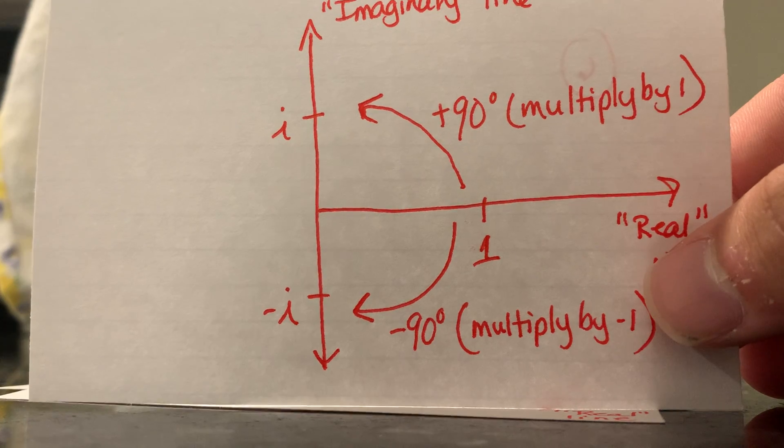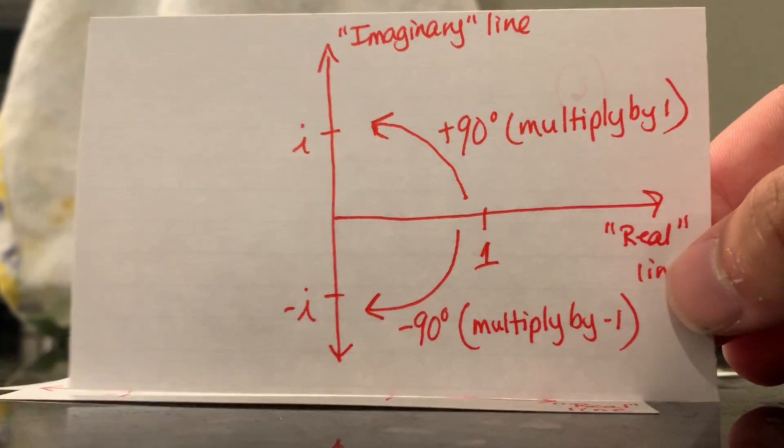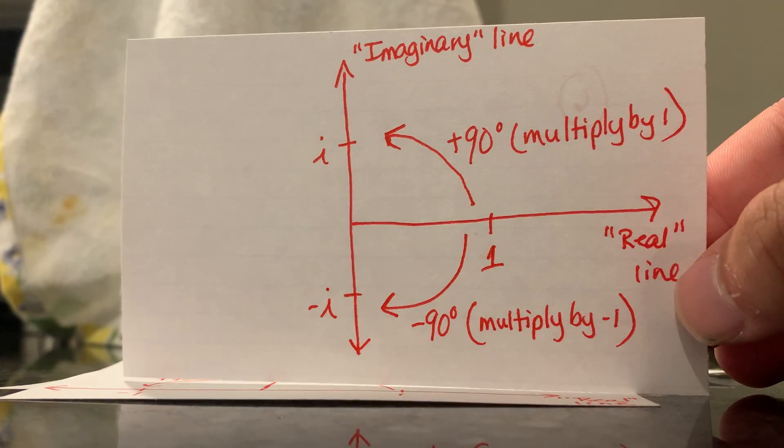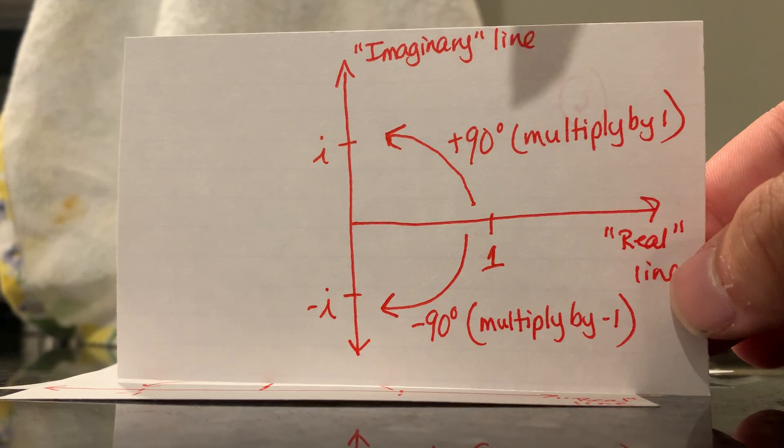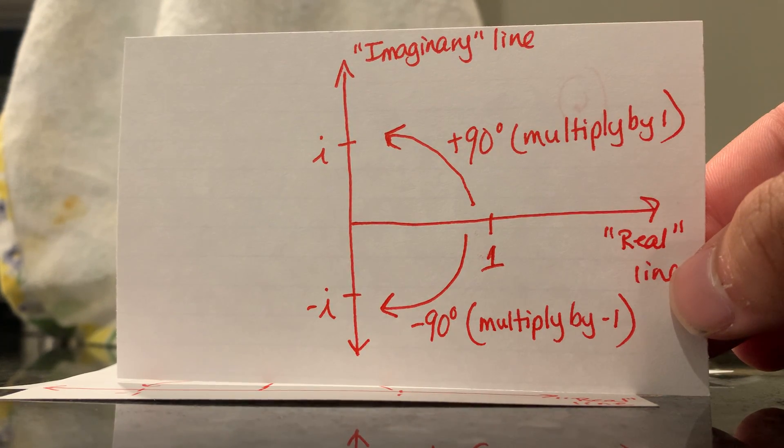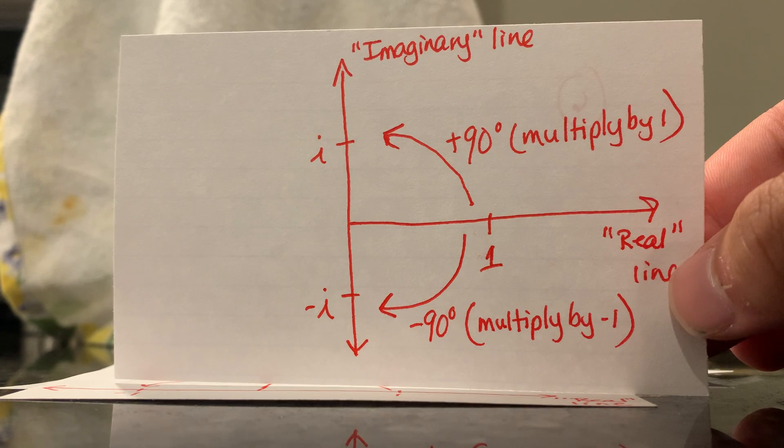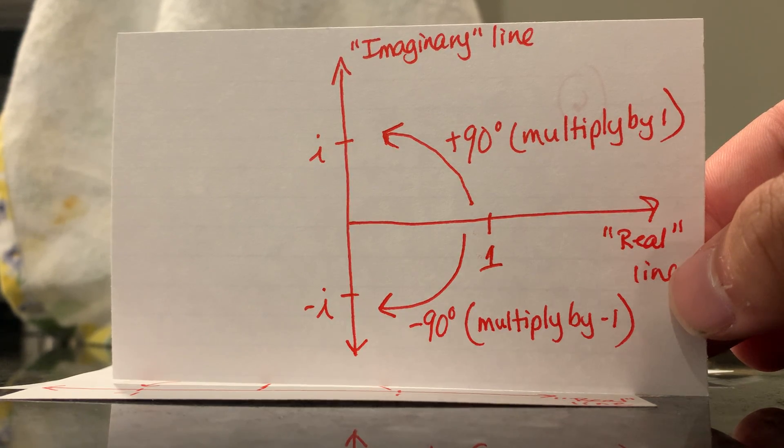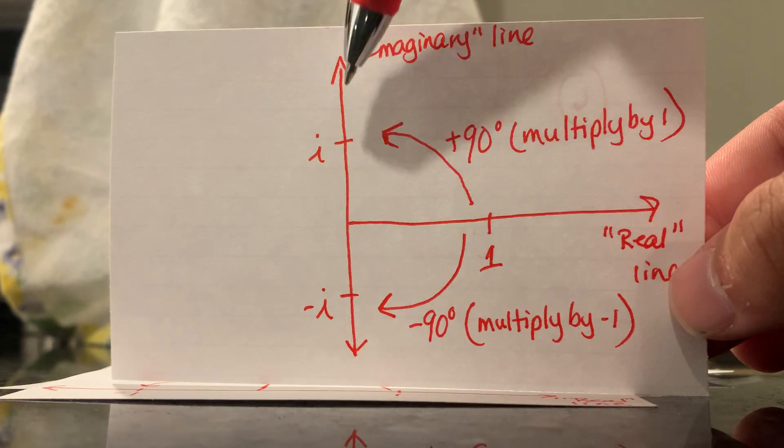As you can see here, we kind of just flipped our diagram over here, our imaginary line, and we did plus 90 and then negative 90. So we started off at i and ended at negative i or vice versa.